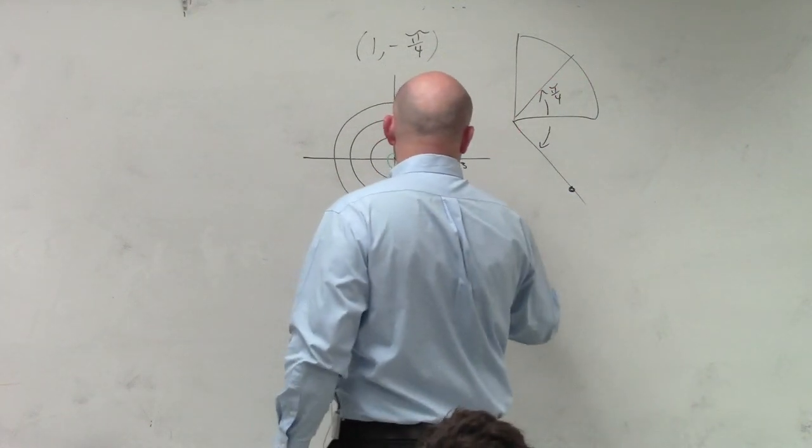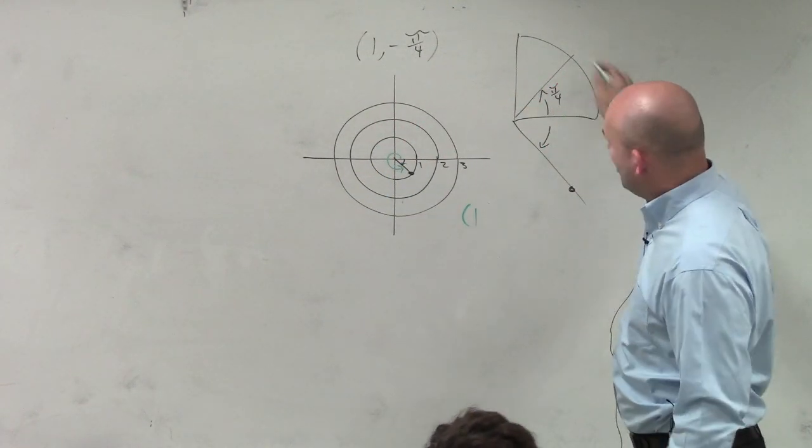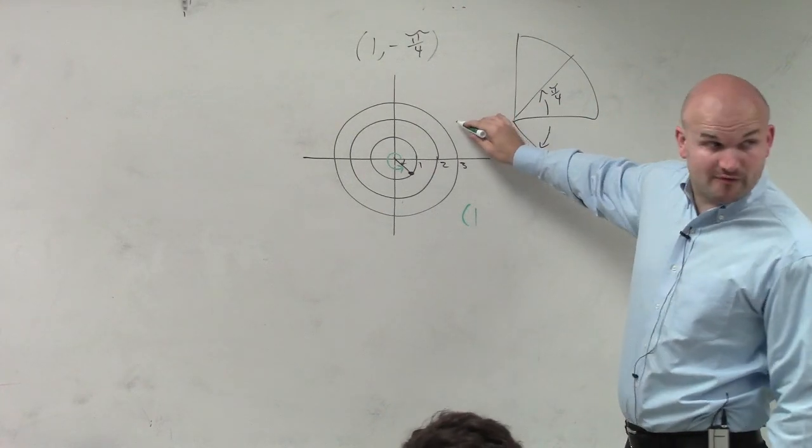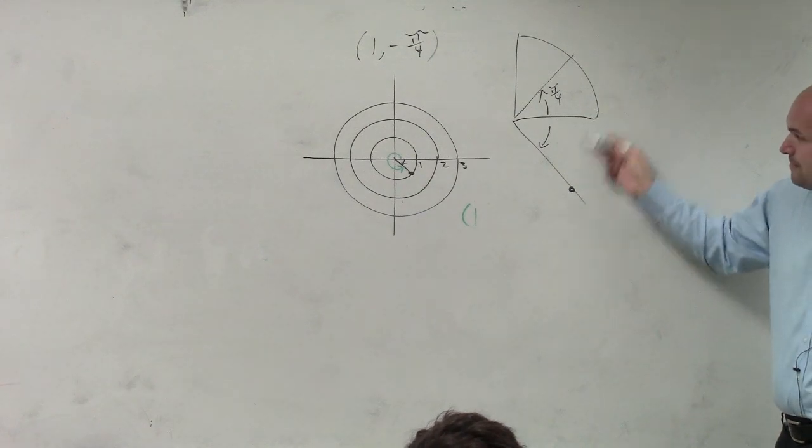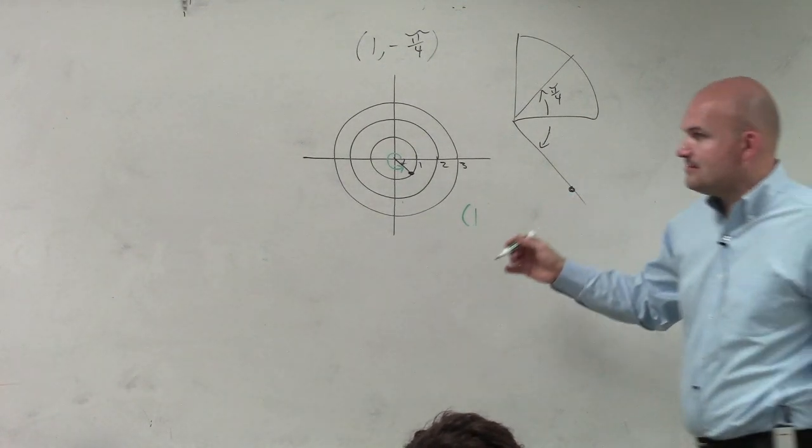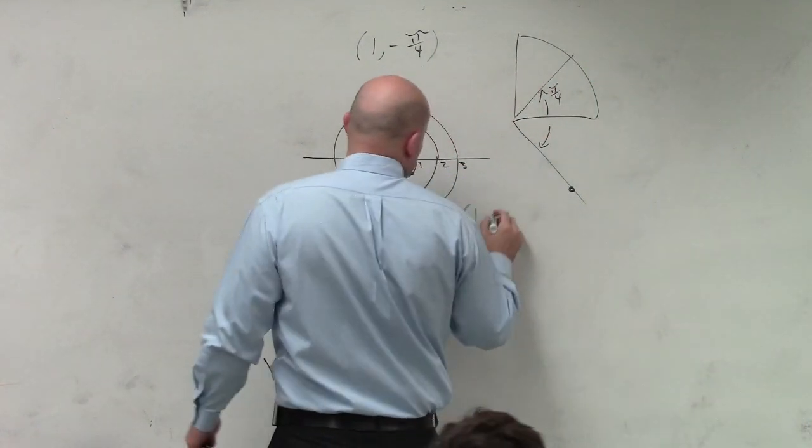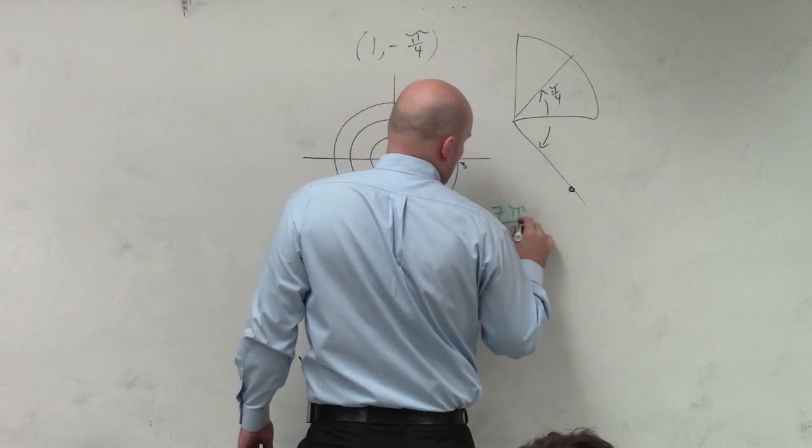But the positive form of this, so again, if halfway around the circle is pi, or 4 pi over 4, all the way around the circle is 2 pi, or 8 pi over 4. If I'm pi over 4 short away, that means I'm at 7 pi over 4.